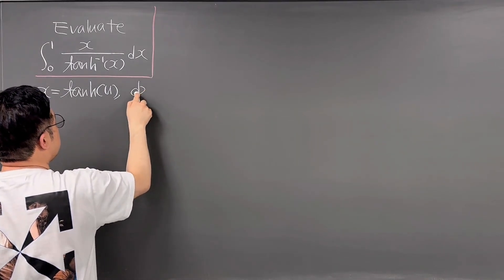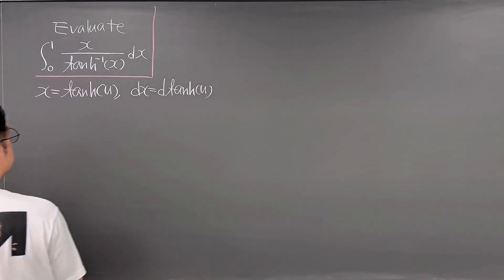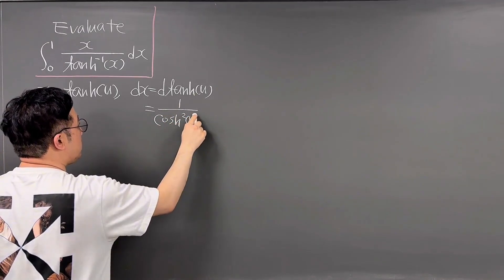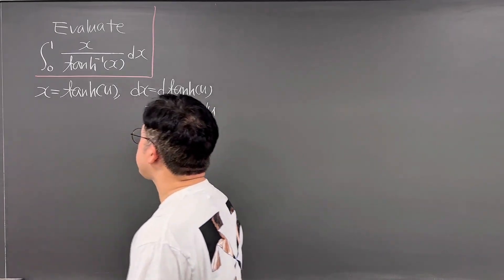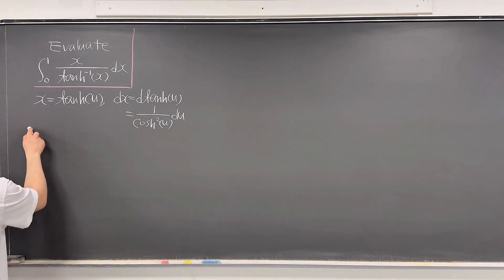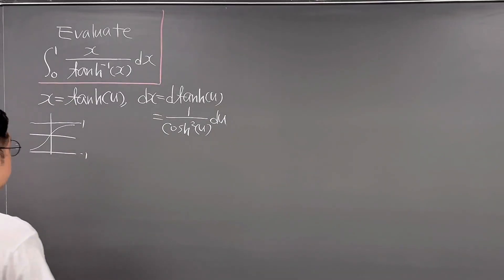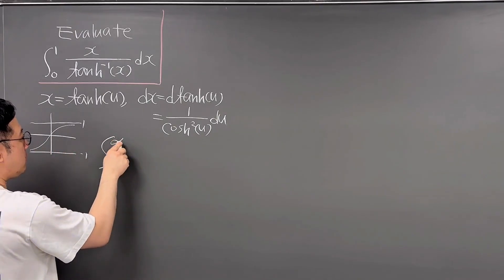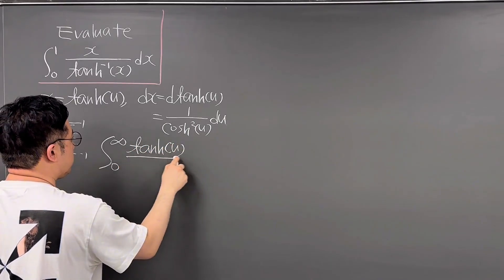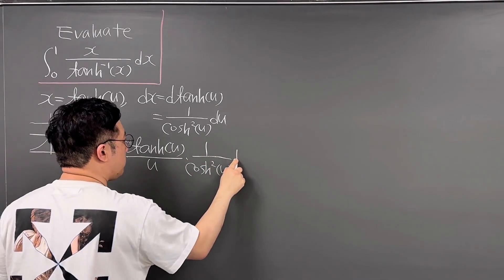Then dx is going to be equal to d(tanh(u)), which is just 1 over cosh²(u) du. Using this, let's rewrite this integral, but the lower and upper bounds should be changing because the graph of tanh looks just like this. So the integral now goes from 0 to infinity. Then we have tanh(u) divided by u times 1 over cosh²(u) du.